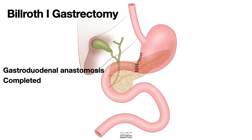In Bilroth-1 gastrectomy, the food goes down the esophagus into the stomach and from the stomach into the small intestine via the duodenum. In other words, if you need to perform an ERCP, you don't have to worry because you can follow the regular path to reach the second portion of the duodenum, as the anatomy has not been altered much.